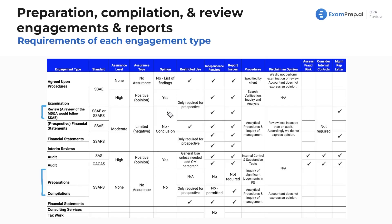For a review, you give a conclusion — not an opinion. For a compilation you issue a report, and for preparation you give findings but no formal report. Regarding restricted use: preparations have none, but prospective financial statements in reviews and compilations are restricted use. Prospective financial statements are projections or forecasts — restricted because investors could misuse unaudited forward-looking statements not intended for general use.